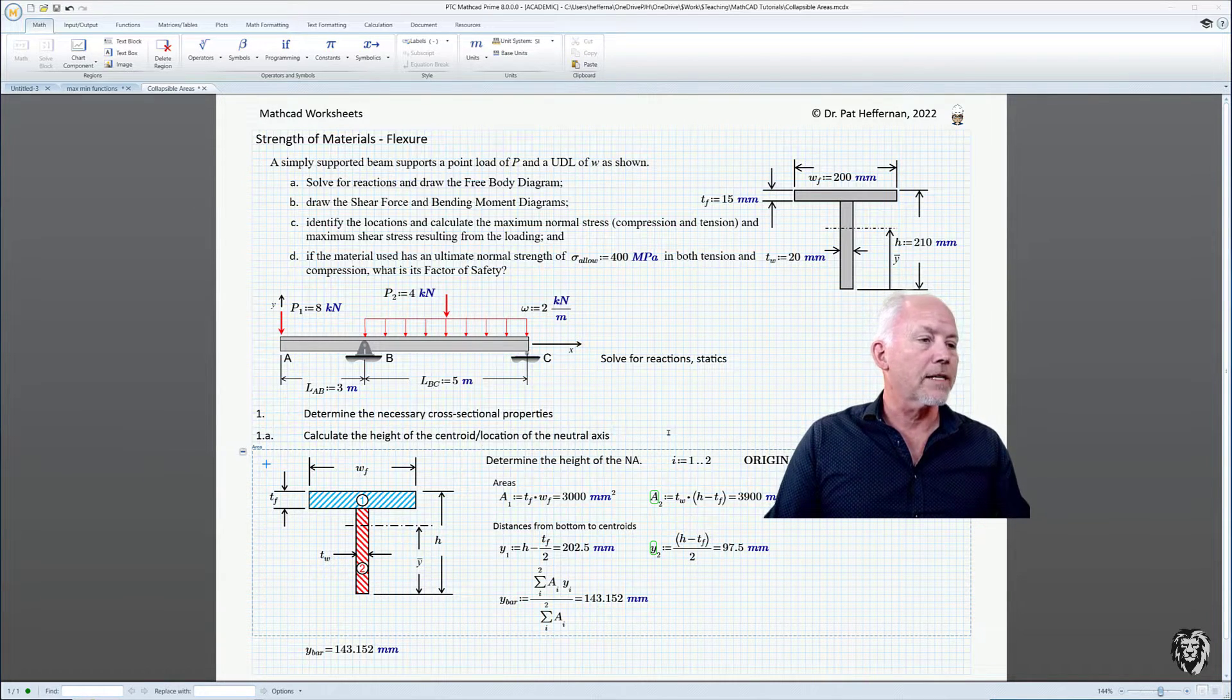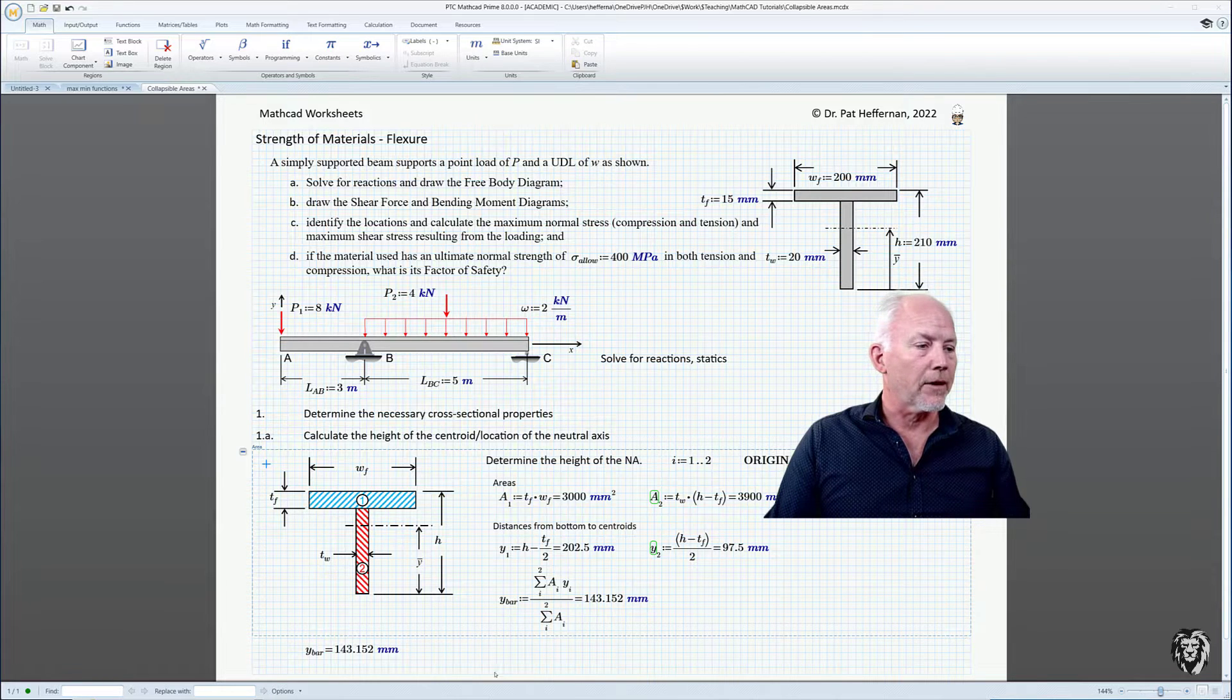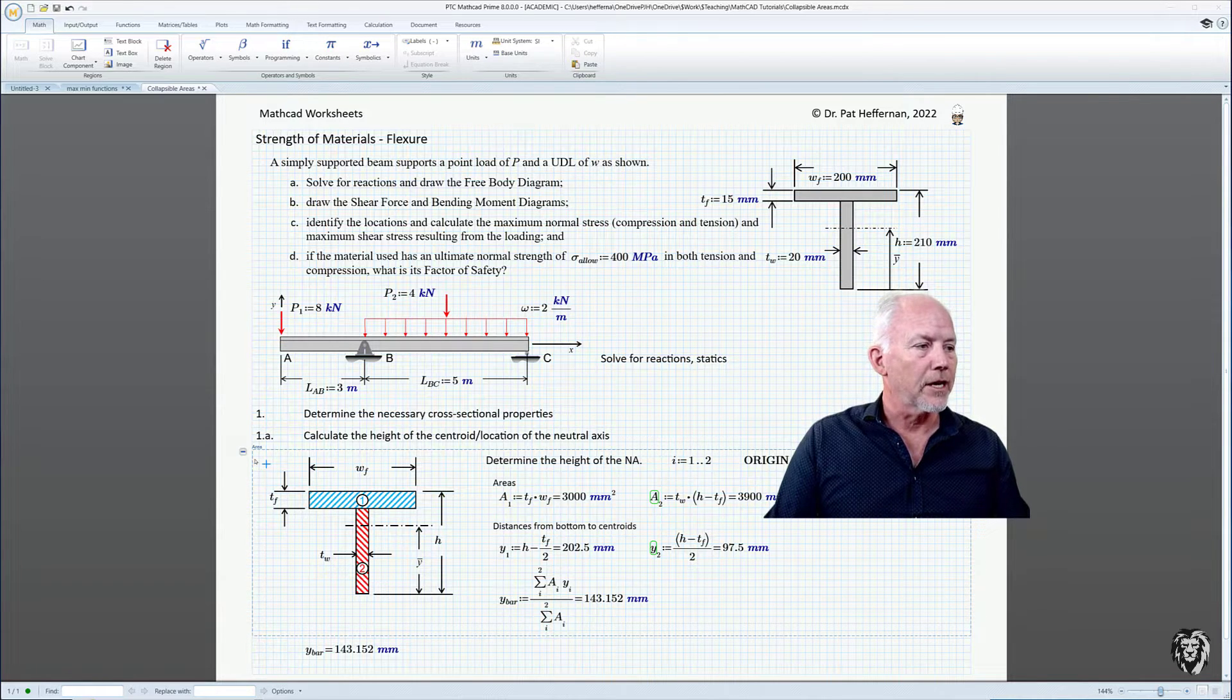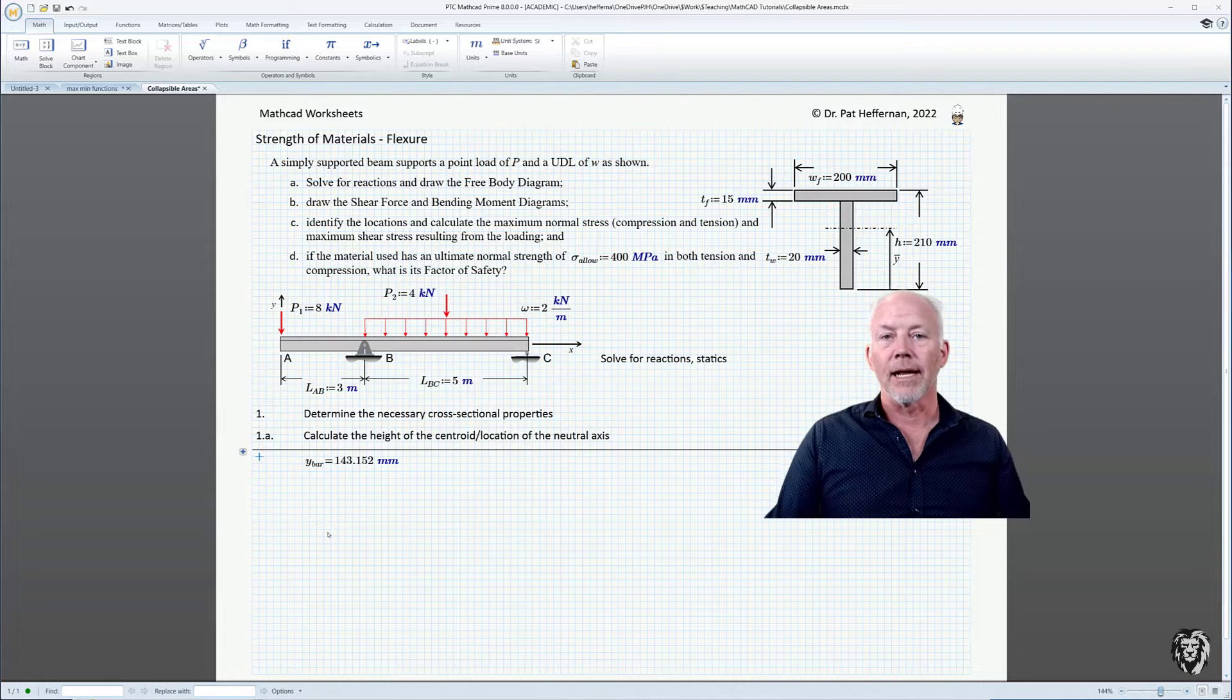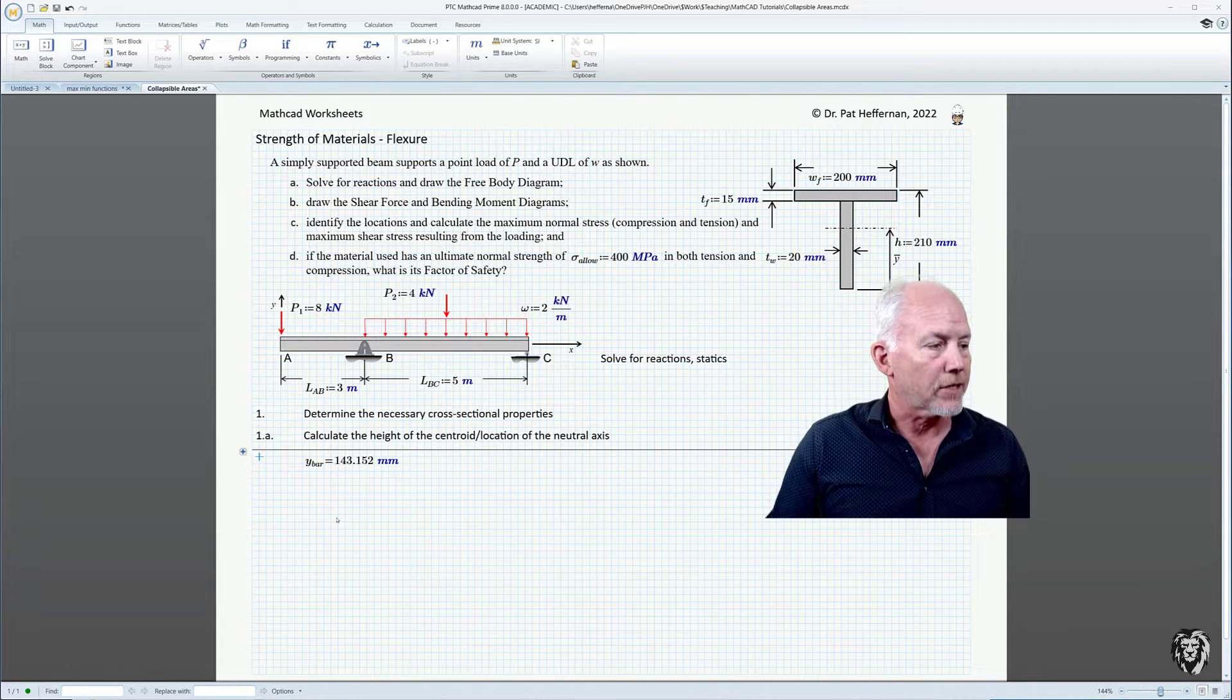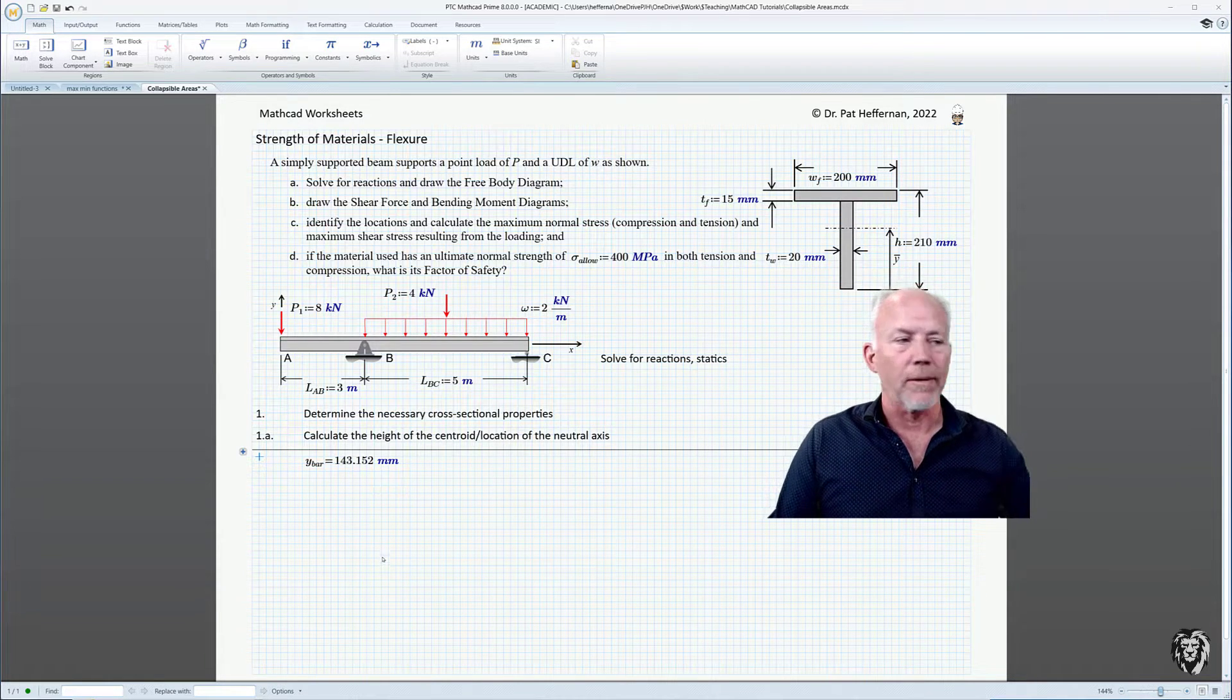And so what I've done is I've put this in a collapsible area, which is that dotted line you see running around it. Now, by pressing on this negative sign here on the left, I'm able to collapse that so that you don't see it. And obviously, if there's a whole bunch of calculations below this, we would see it.